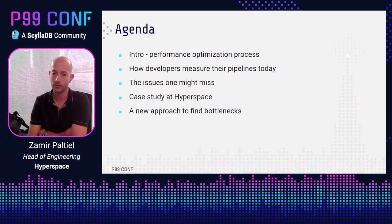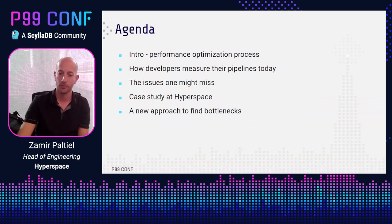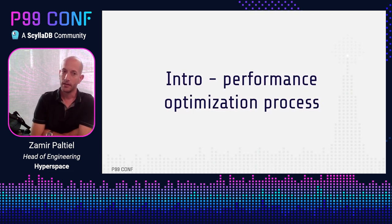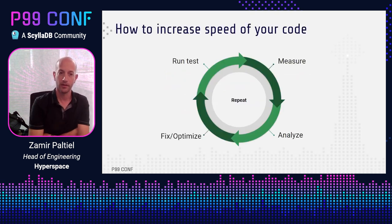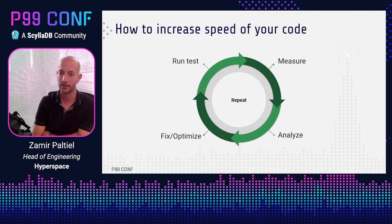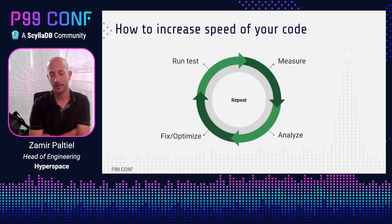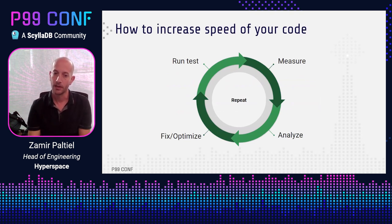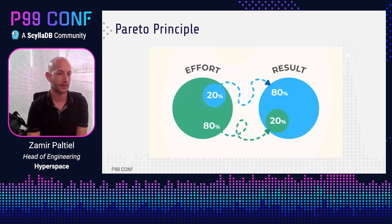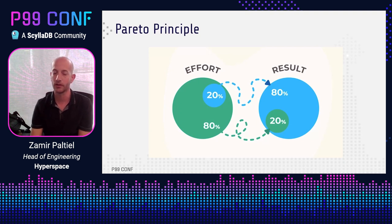Let's start with an intro about the performance optimization process. Performance optimization is a cycle where you run tests, you measure the performance of the code during the test, analyze the results, and then fix the main issue you saw in the results. You repeat this loop until you reach the point where you're satisfied with the results. The reason for this cyclic process is you want to spend only 20% of the time to reach 80% of the result.